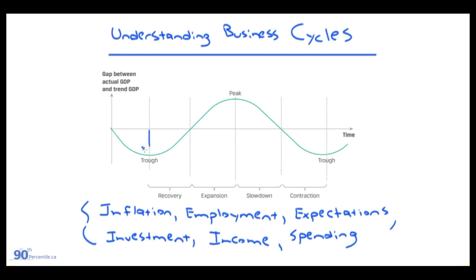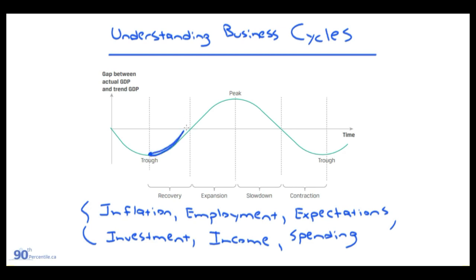So inflation is going to be low at the trough, and at the peak we're going to be accelerating. Same thing with employment — in the early stages of recovery, employment is going to be low, and here we're going to have employment very high. Business expectations: when we're starting to recover and we can see the upswing, expectations are going to increase. After we hit the peak, they're going to decrease. So it's the same thing across the board.